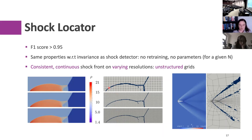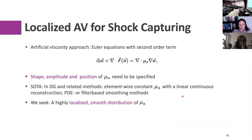This is something that wasn't available before in the high-order community. On the right-hand side, you can see it also works on very bad unstructured grids that you might actually use in a real situation — I made this grid particularly bad on purpose, just to demonstrate robustness.